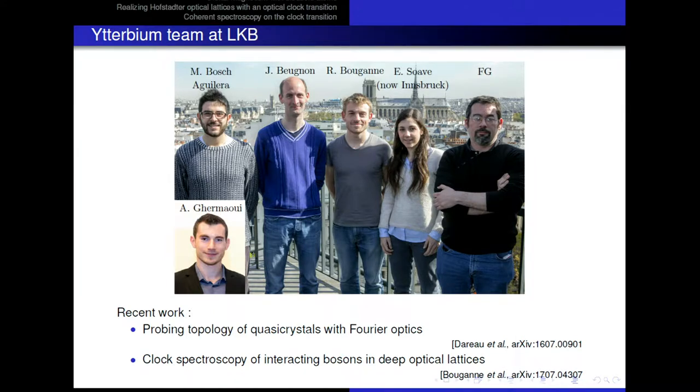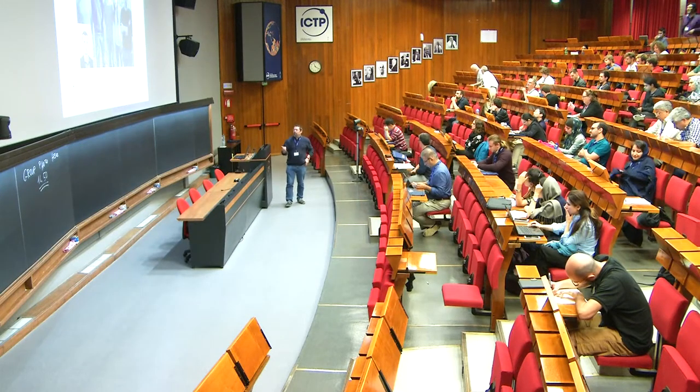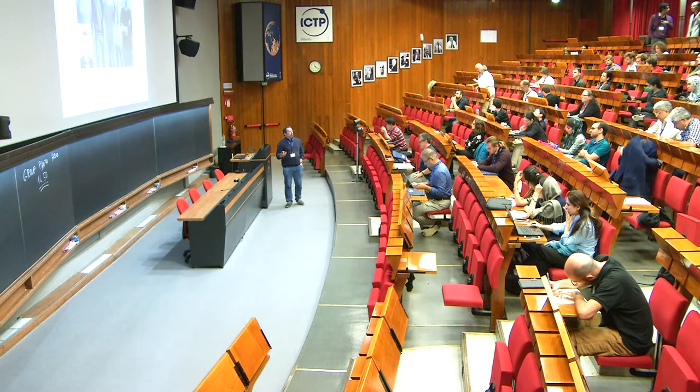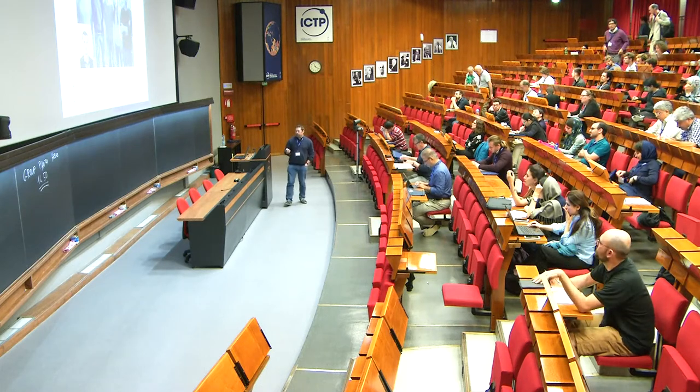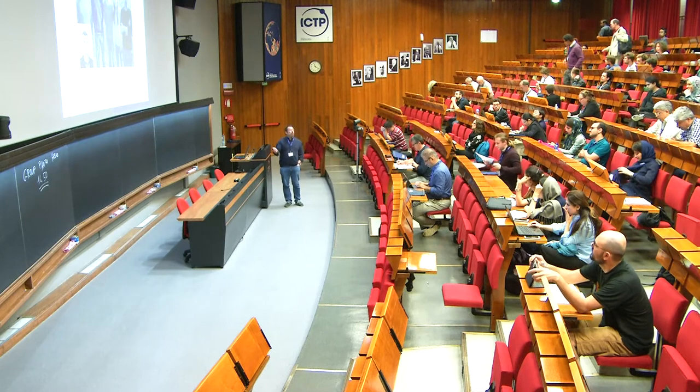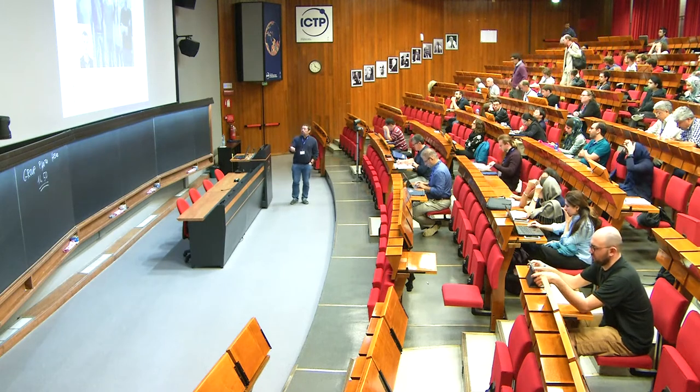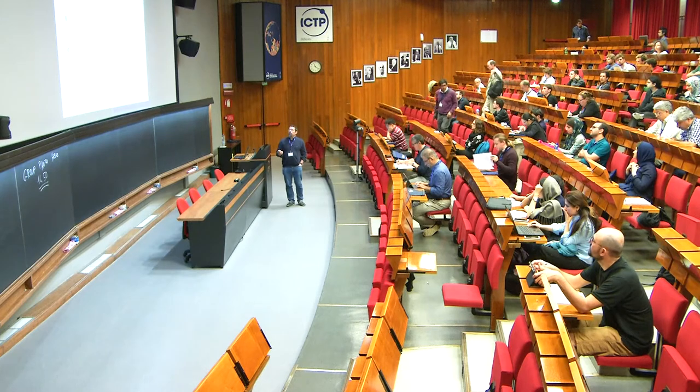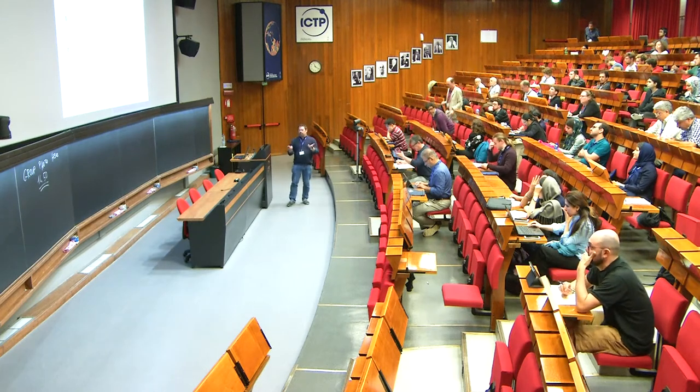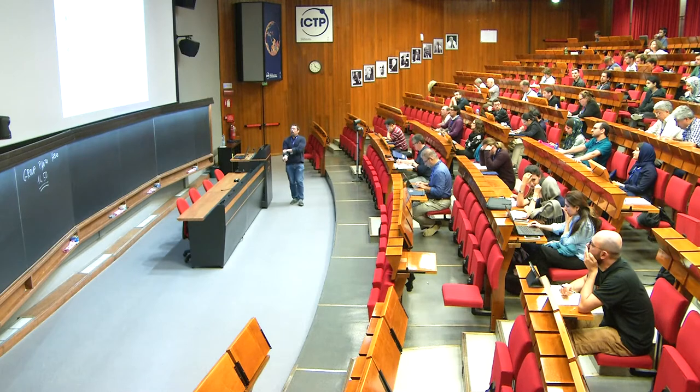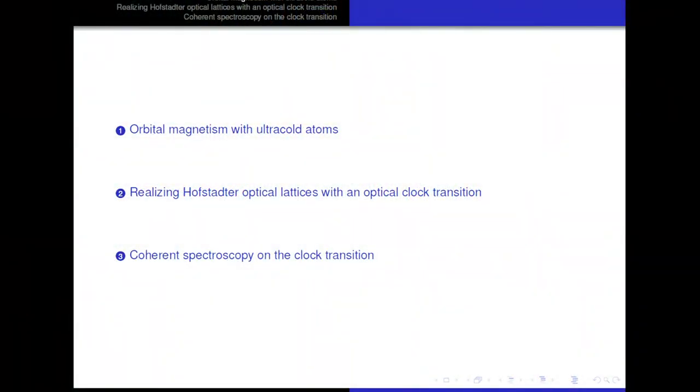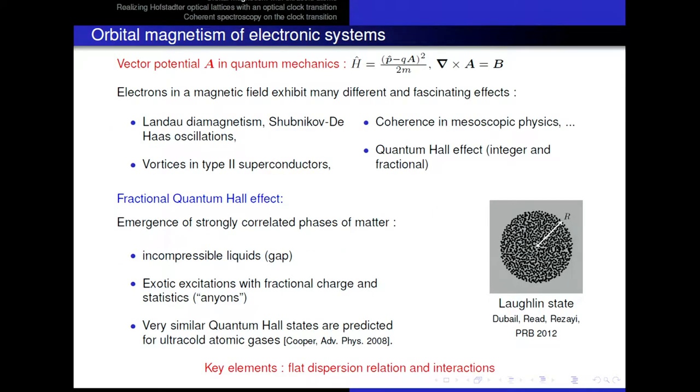This is an optics work where we showed how we could use interference or Fourier optics to probe the topological properties of quasicrystals, Fibonacci chains in the particular example. So in this talk, I'm going to concentrate on the behavior of bosonic ytterbium in optical lattices. And basically, the goal in our project is to realize, with these ultracold bosonic atoms,